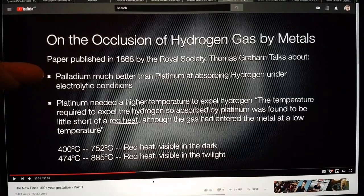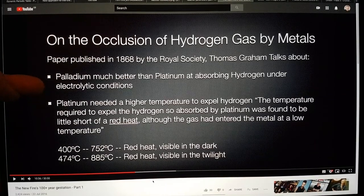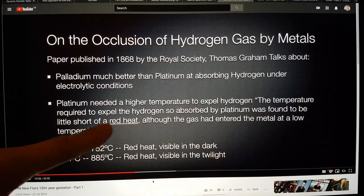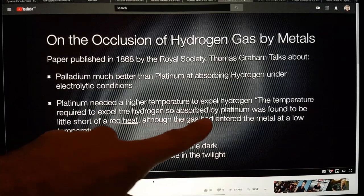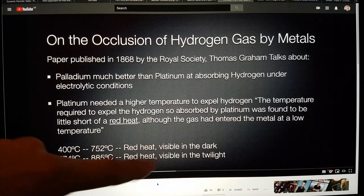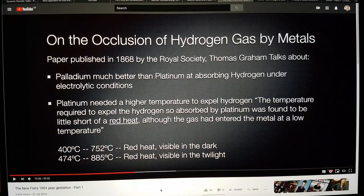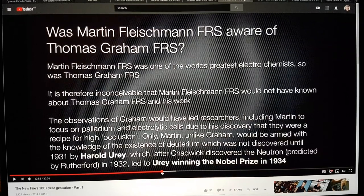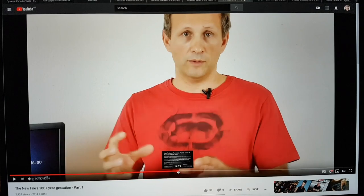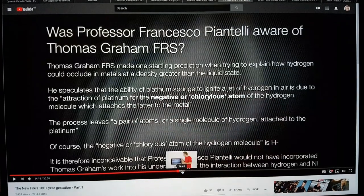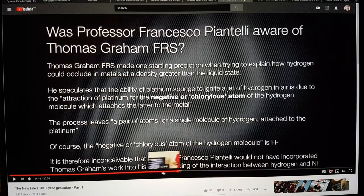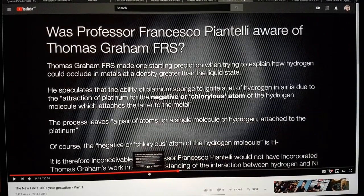And he states that the hydrogen cannot be a gas when it is taken into the metal. So, he's effectively saying it needs to become bare protons or something like that. And then he states that the gaseous hydrogen can be absorbed at very low pressures into the heated occluding material. So, essentially, these are all the parameters that you would see in the Mizuno reactor.